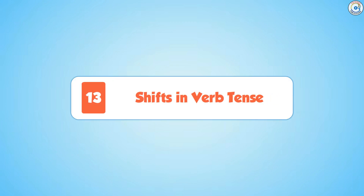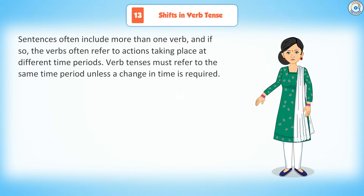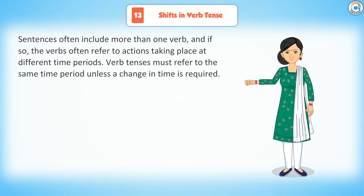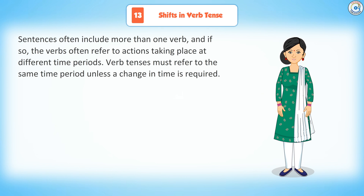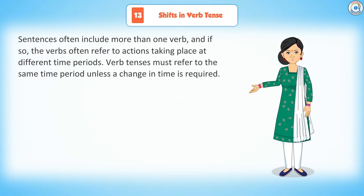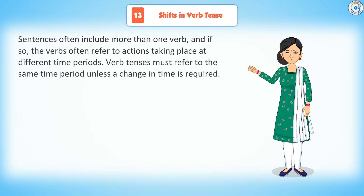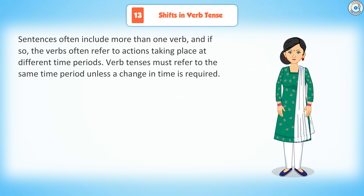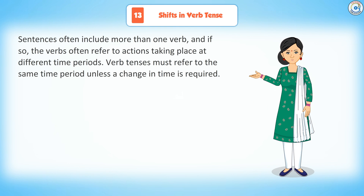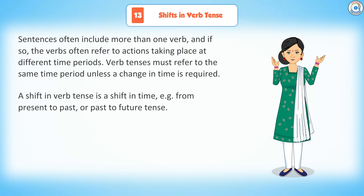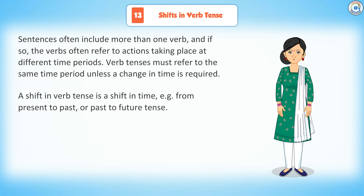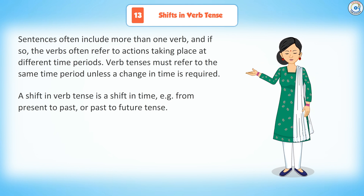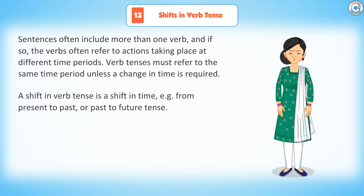Chapter 13: Shifts in Verb Tense. Statements often include more than one verb, and the verbs often refer to actions taking place at different time periods. Verb tenses must refer to the same time period unless a change in time is required. A shift in verb tense is a shift in time — for example, from present to past, or past to future tense.